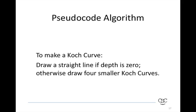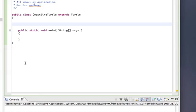So here now is our pseudocode algorithm. To make a Koch Curve, you're going to draw a straight line if the depth is 0, and otherwise you're going to draw four smaller Koch Curves. So we need to go from that to actual code in Java.